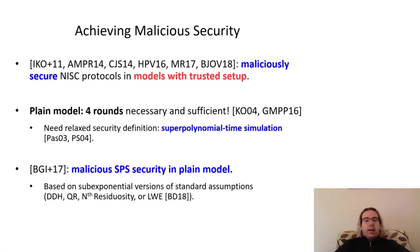Badr-Narayanan et al., in 2017, demonstrated that a two-round protocol with malicious SPS security in the plain model could be based on sub-exponential security of any one of a variety of standard assumptions. However, none of the protocols we've discussed so far satisfy the succinctness property we mentioned earlier. As promised, let's return to this now.